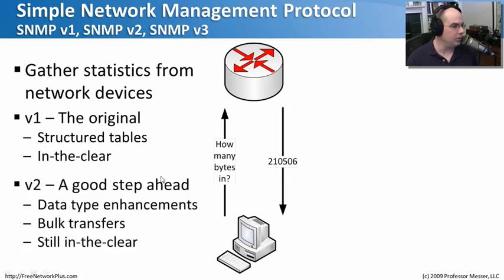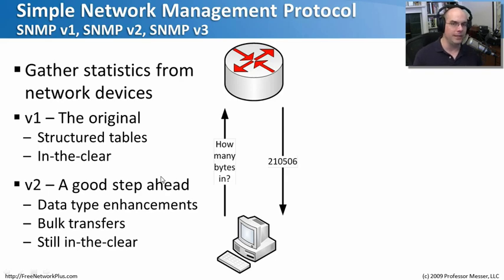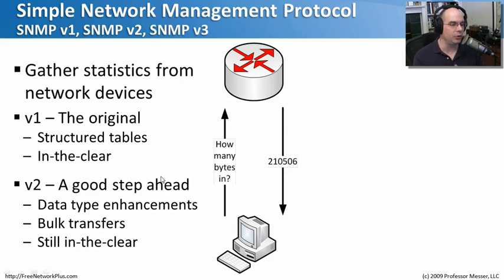So we created SNMP version two, where I can now do bulk data — asking for multiple things at one time and getting multiple answers at one time, improving the efficiency of communication. It also improved the type of data available. However, it didn't fix the in-the-clear problem; the data was still not encrypted going back and forth.